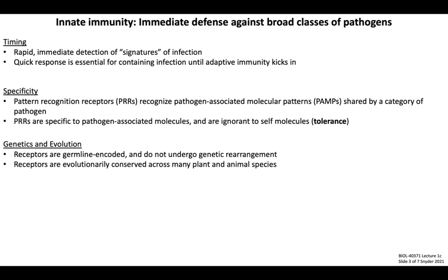Genetics and evolution are another important aspect differentiating innate from adaptive immunity. The receptors and executioner molecules of innate immune responses are typically germline encoded and not subject to any sort of genetic rearrangement, meaning their repertoire remains fixed over the course of an individual's lifetime. These receptors and signaling components are also highly conserved amongst most animal lineages, with pattern recognition receptor homologues found in species ranging from plants to corals to worms to vertebrate mammals. We can think of innate immunity as a more evolutionarily ancient form of host defense.